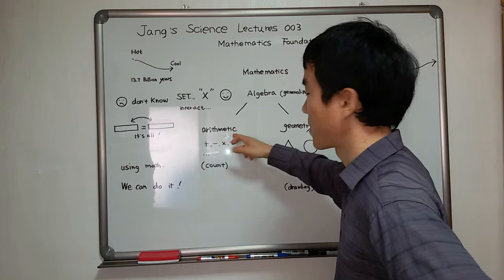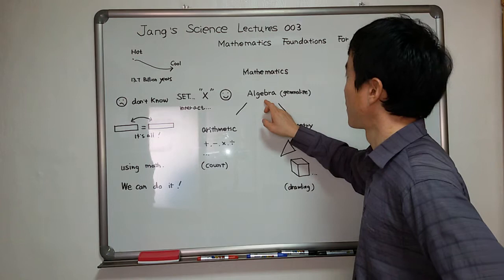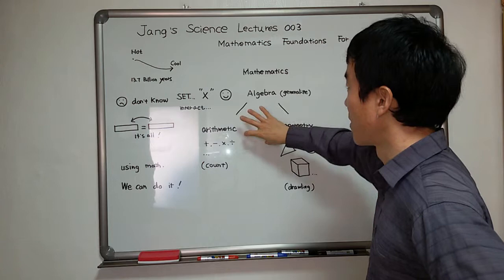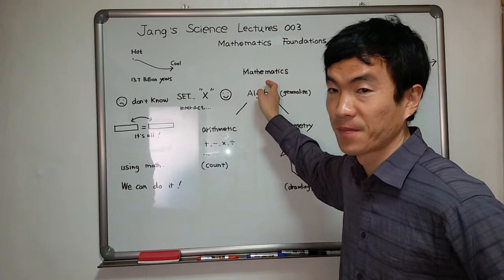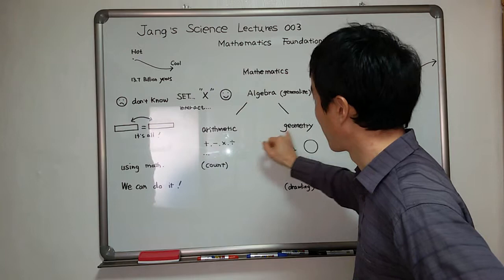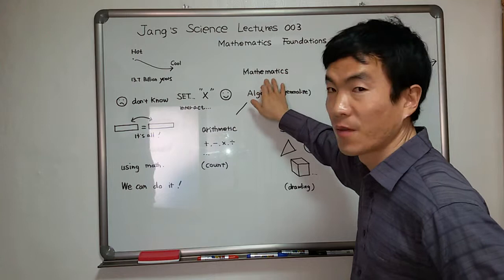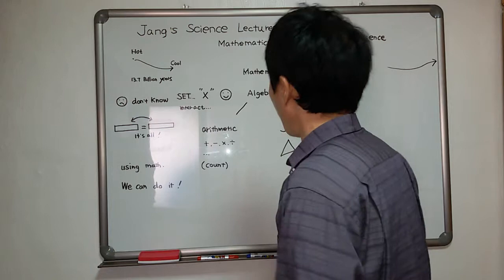Mathematics is three circles: arithmetic, geometry, algebra. Three contents in interaction is called mathematics. This is not complete alone. The three combination is perfect mathematics.